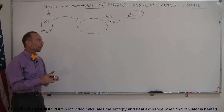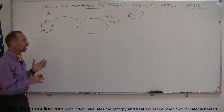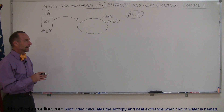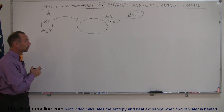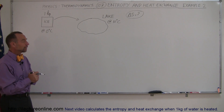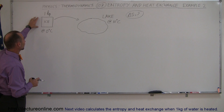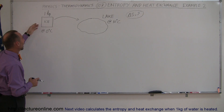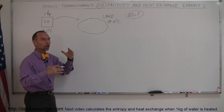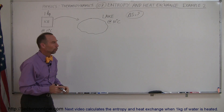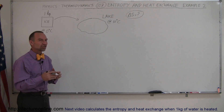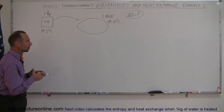Since trying to figure out what the change in entropy is can be pretty tricky, I'm going to show you several examples. Here we assume that we have a block of ice, one kilogram, at zero degrees centigrade, and we throw that block of ice into a large lake that is at 10 degrees centigrade. What is the change in entropy in this case?